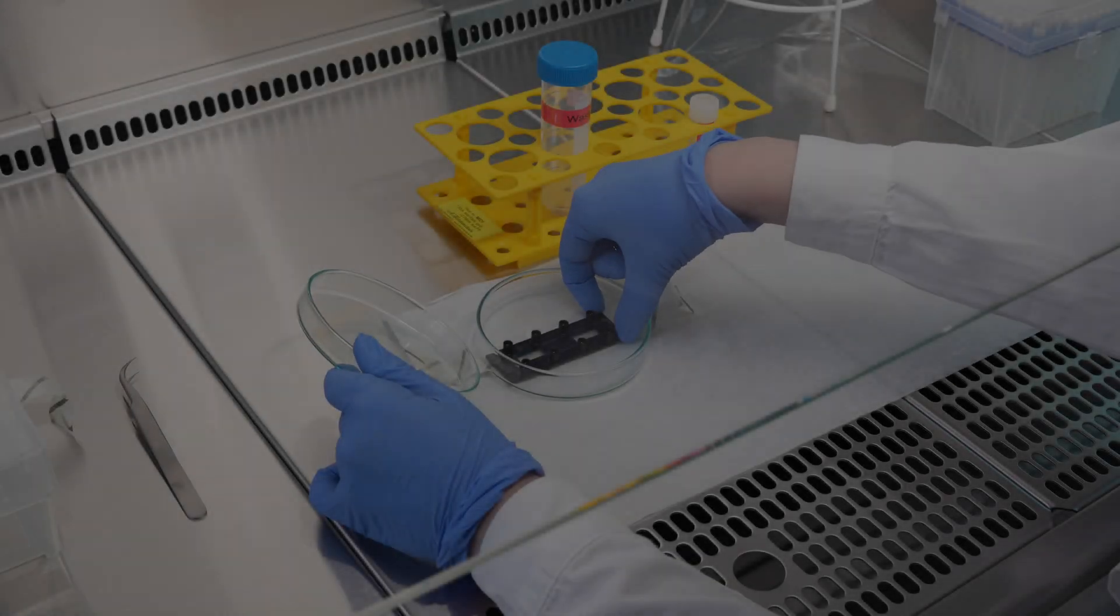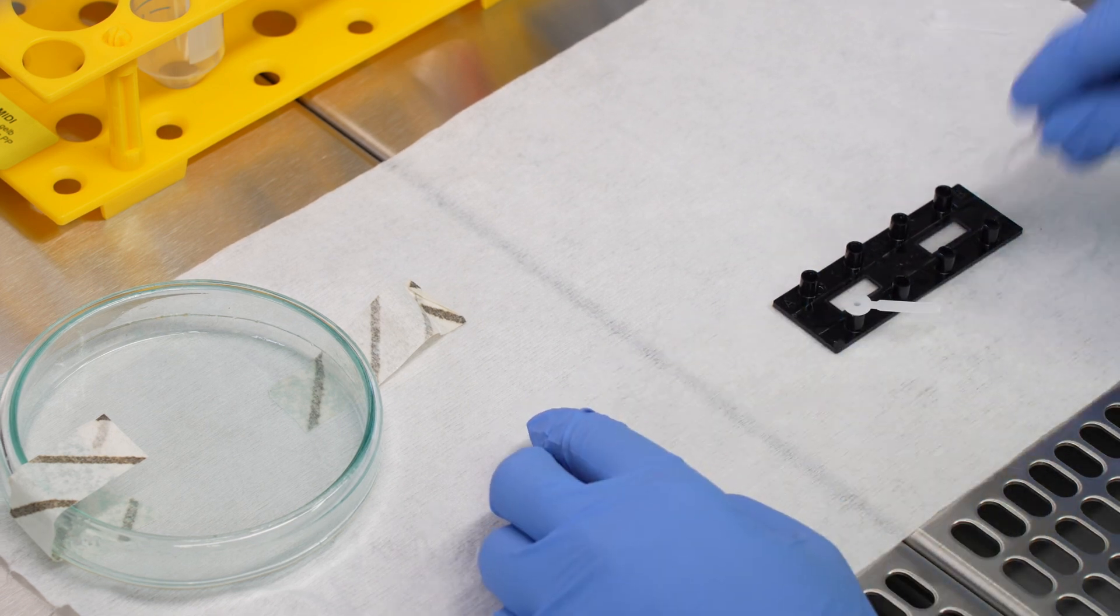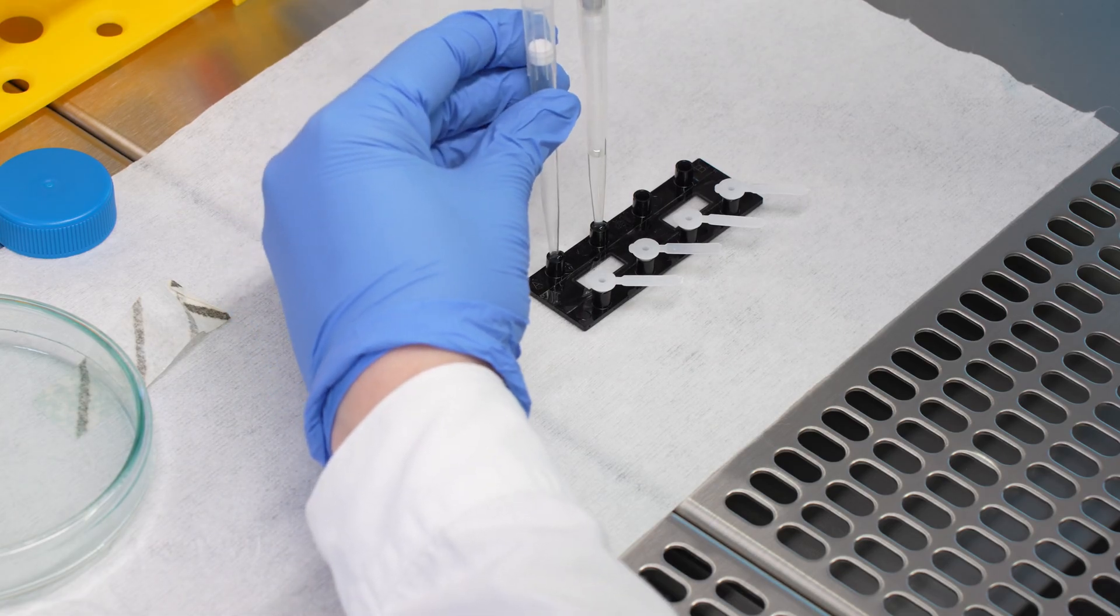The second step is coating the biochip membrane to prepare for cell seeding. Coating solution is applied to all channels used for cell seeding and incubated as usual.